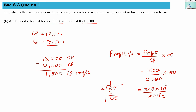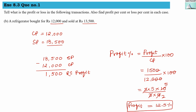Dividing 25 by 2: 2 goes into 25 giving 12, remainder 1. Adding a decimal point and a zero gives 10, divided by 2 gives 5, with remainder 0. So the answer is 12.5. The profit is rupees 1,500 and the profit percentage is 12.5 percent.